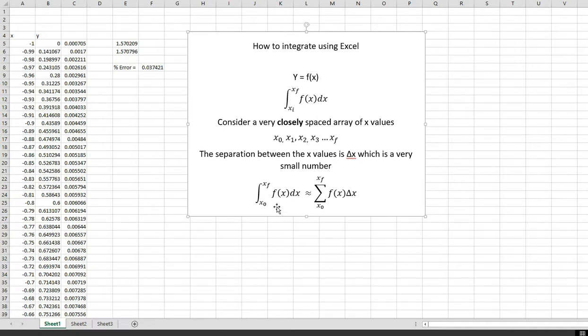The integral can be replaced by a sum. The integral of f of x dx is approximately equal to the sum of the f of x values. We're actually going to use the average of adjacent values times the spacing delta x summed up over all points.